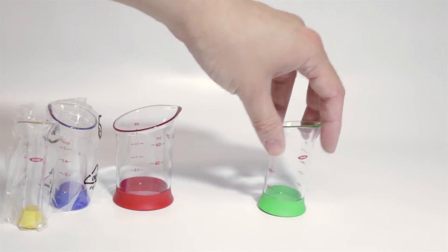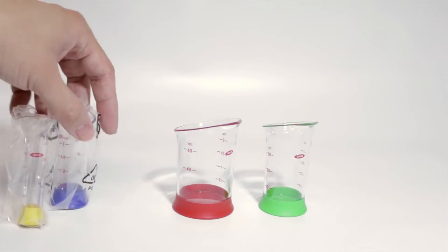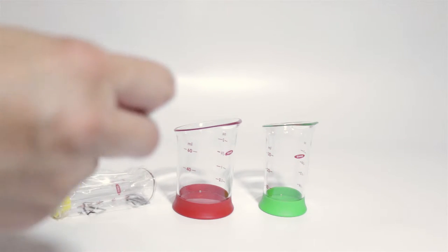You have the one ounce, the two ounce, the one tablespoon, and the one teaspoon. For some reason, the smaller ones are in plastic bags while the larger ones are not.